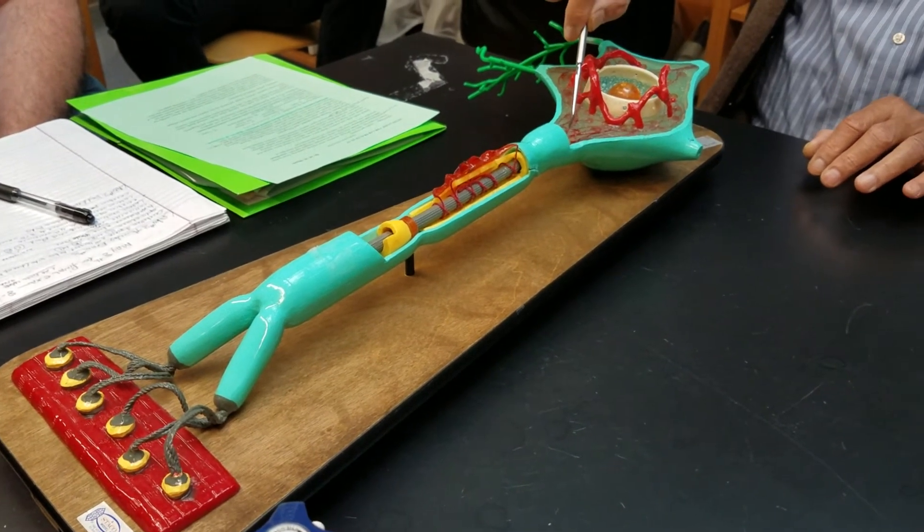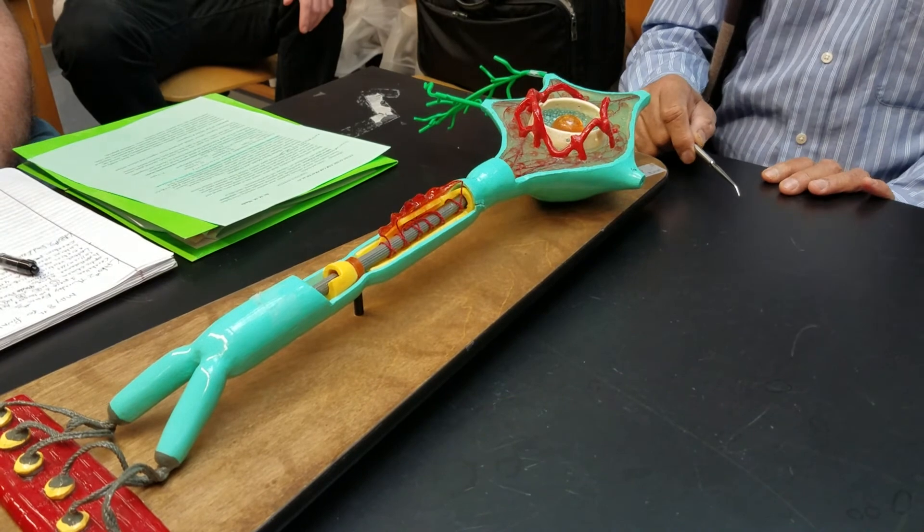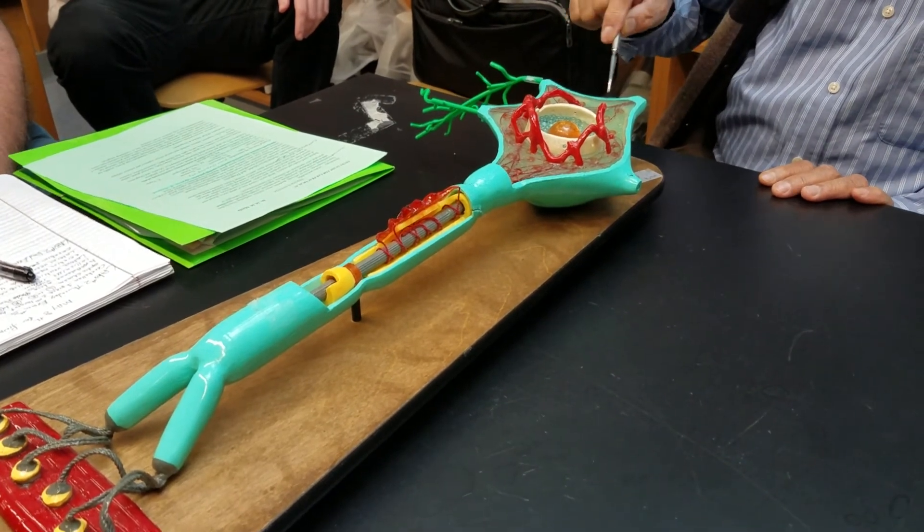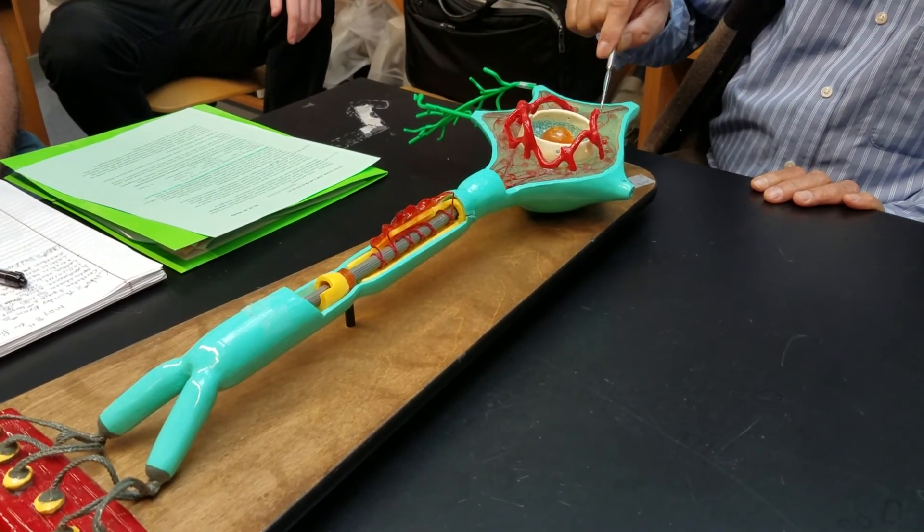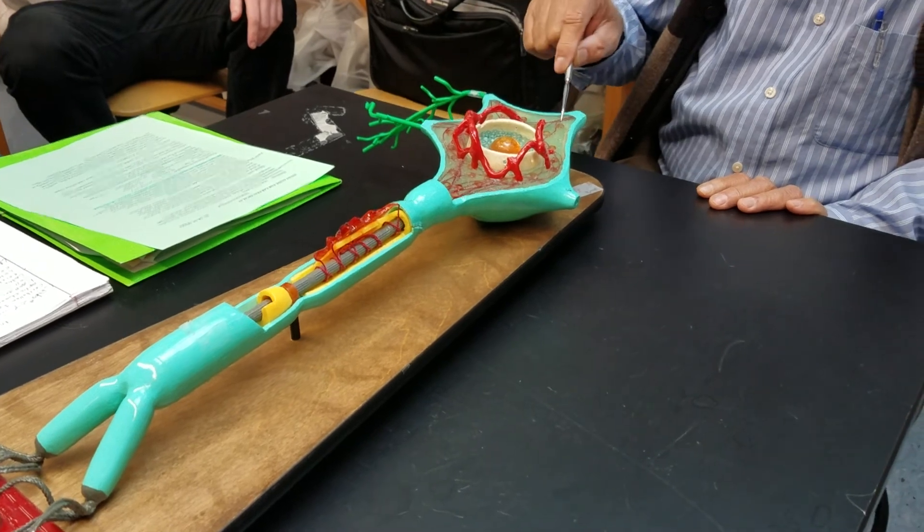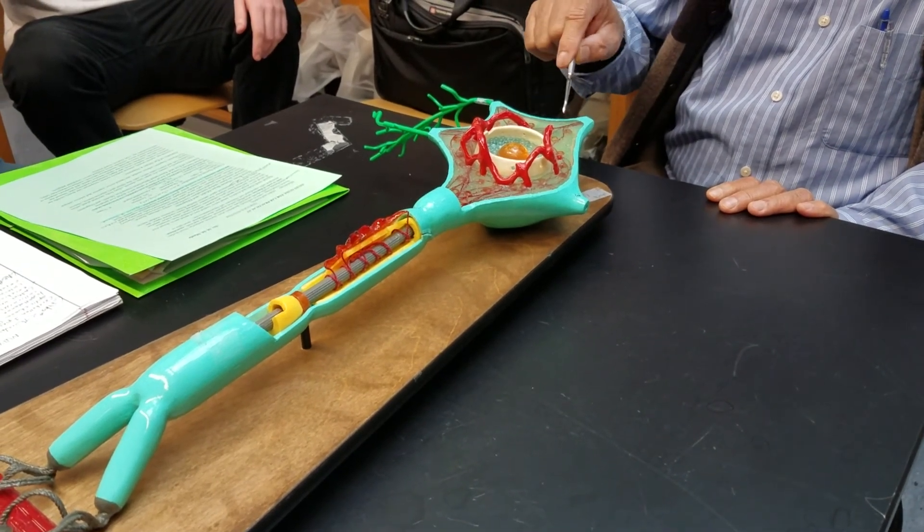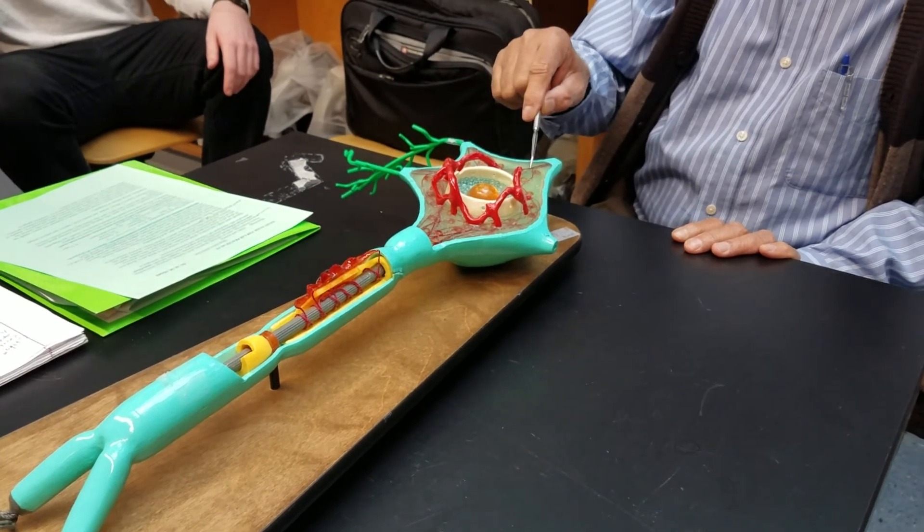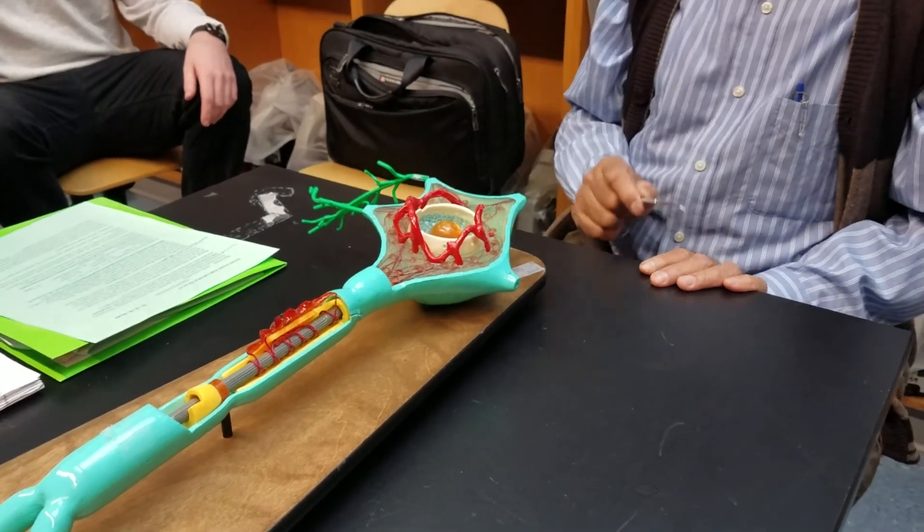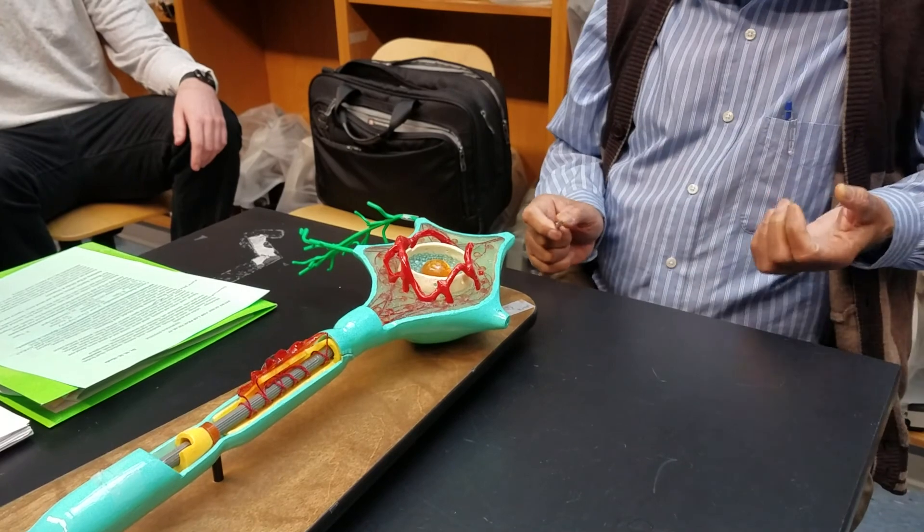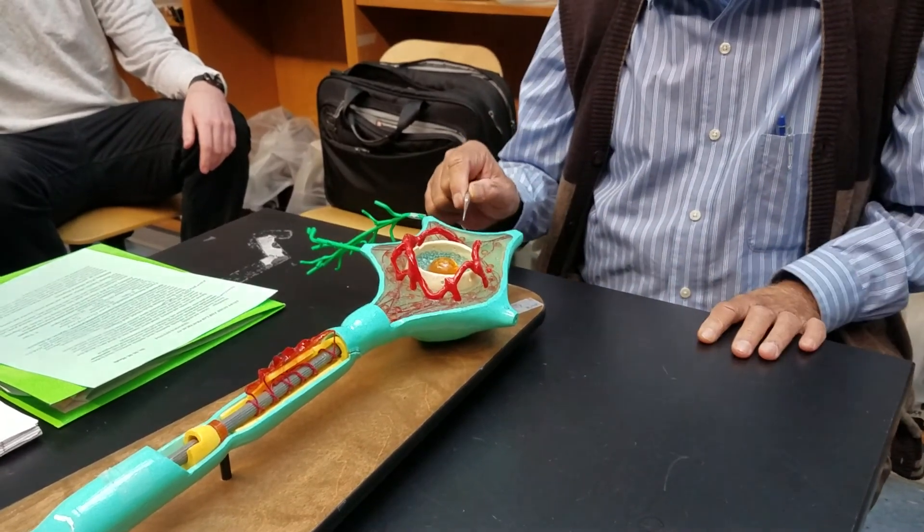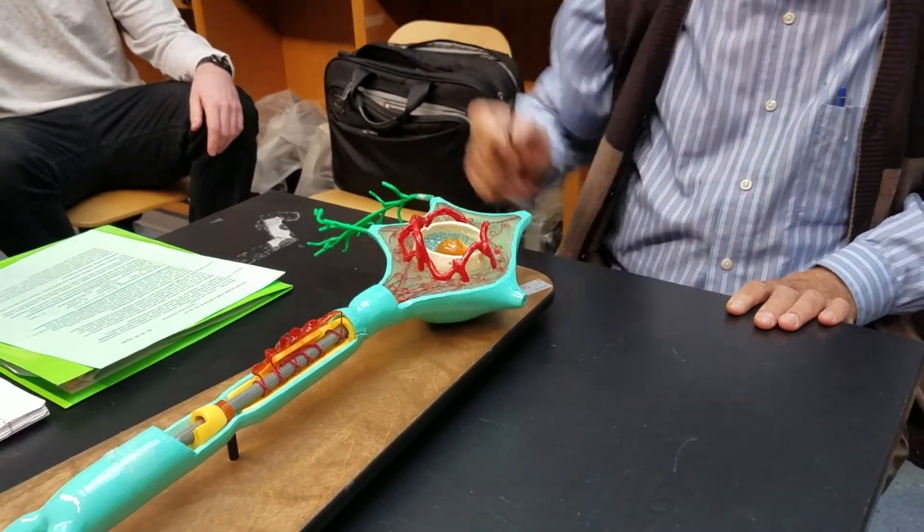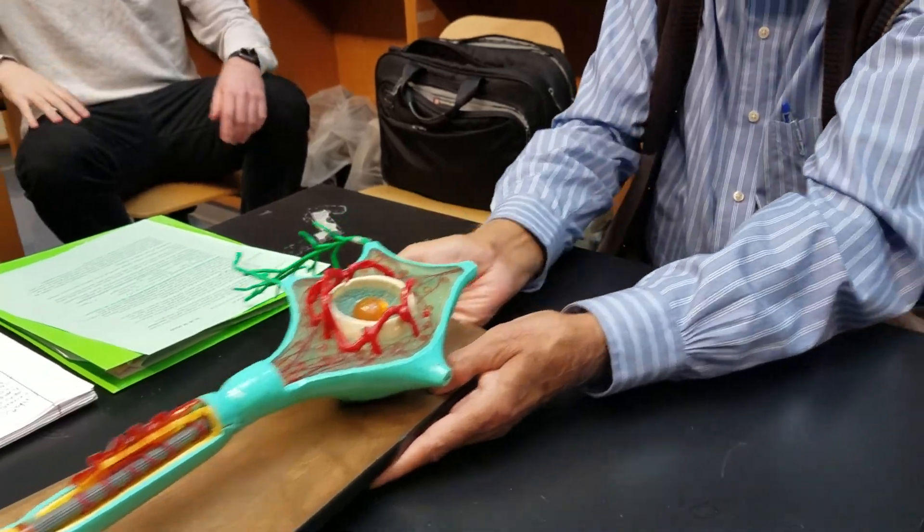And dendrites. And these beads. They are very much exaggerated. And Nissl bodies. Okay? These are Nissl bodies. Meaning, rough endoplasmic reticulum. That will be much clearer in the other model. So, you can take this model. We're done.